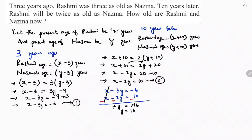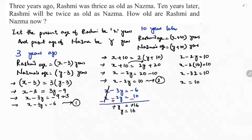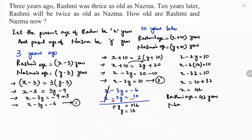Now substituting Y equals 16 into equation 2: X minus 2 into 16 equals 10. X minus 32 equals 10. So X equals 10 plus 32, which is 42. Rashmi's age is 42 years and Nizma's age is 16 years.